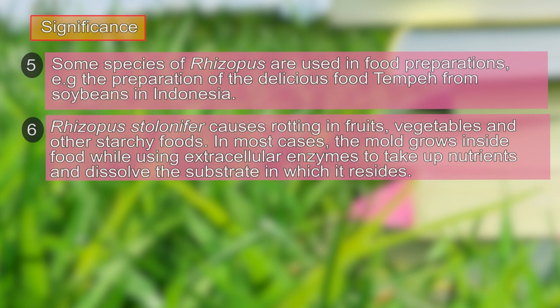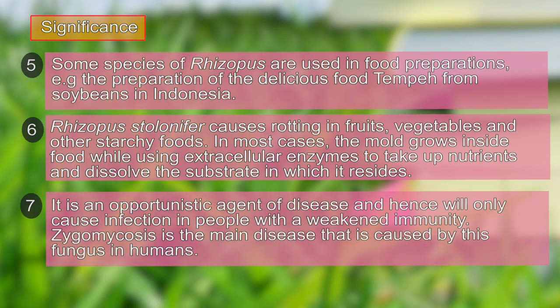Rhizopus secretes extracellular enzymes, takes up nutrients dissolved in the substrate, and causes rotting of most fruits and vegetables. Rhizopus is also an opportunistic agent of disease — it does not cause infection in healthy humans, but in those with weakened or suppressed immunity, it results in a disease called zygomycosis. Many species of Rhizopus are responsible for this disease.